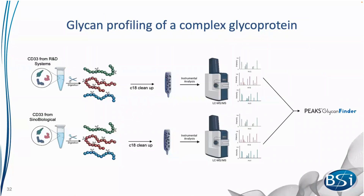That was all done with one purified monoclonal antibody. Now we're moving to more complex samples. We started a pilot project with the CD33 protein, purchased from two different companies — R&D Systems and Sino Biological. CD33 was expressed in different host systems: CHO cells from R&D Systems and HEK-293 cells from Sino Biological. We're interested in identifying glycans at this protein's multiple glycosites and finding differences in glycosylation between the two different preparations.